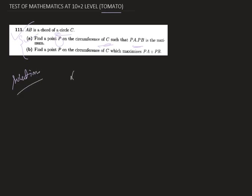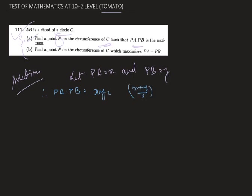Let's start the solution. Let PA equals X and PB equals Y. Therefore PA multiplied by PB equals XY. Now XY can be written as the quantity (X plus Y) over 2, whole squared, minus (X minus Y) over 2, whole squared.